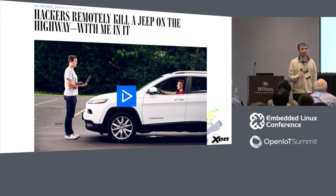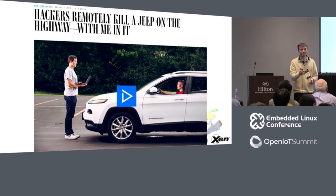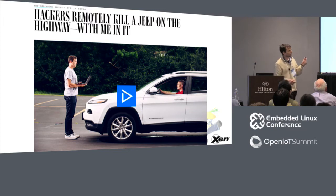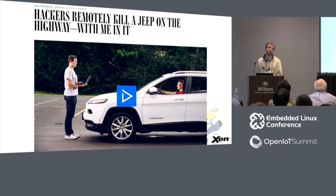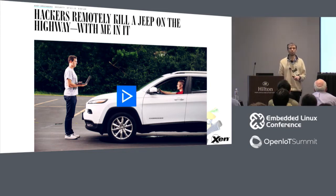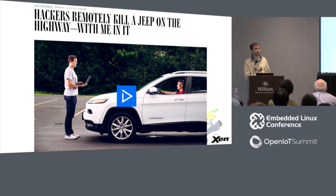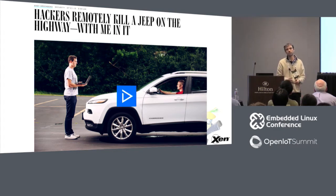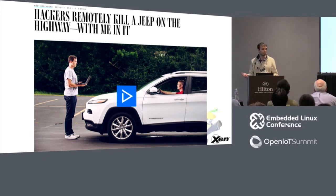How many of you managed to get through the conference without hearing this example? Three? Well done. So I'll be quick about it, but basically this is a Cherokee Jeep car that was hacked remotely. The way it was done is they connected to the infotainment system based on Uconnect, broke into Uconnect, managed to revise the firmware on a nearby chip, and from there they could send commands over the CAN bus, basically taking over the vehicle — brakes, steering, anything.